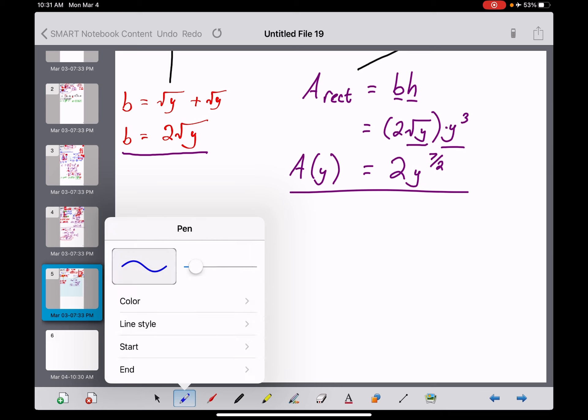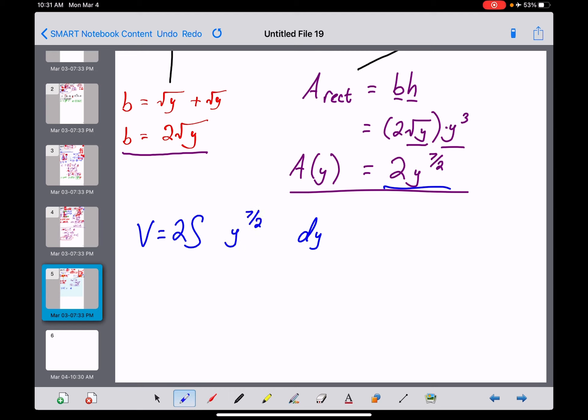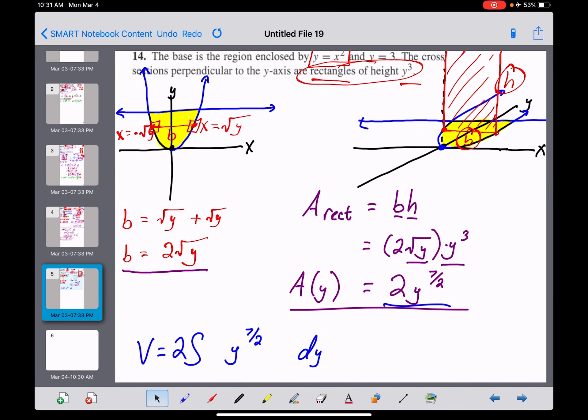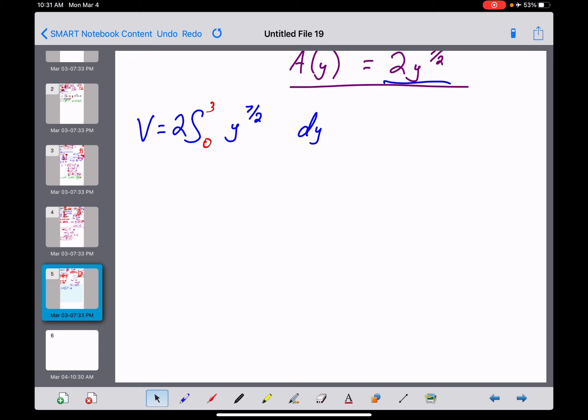The rest of this, finding the volume, shouldn't be that tough. Volume is going to be a definite integral, we said long ago, to take it with respect to y, of this function right here. I'll pull the two out in front. We'll get a y to the seven-halves, and all we're missing are the limits of integration, lowest and highest values of y. I like to see that from this graph right here. Looking from bottom up, I'm going this way. This region begins right here at a y value of zero, and it ends right there at a y value of three. That's the first time that three has really come into play here.